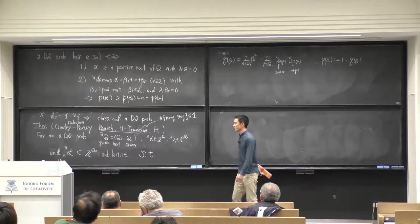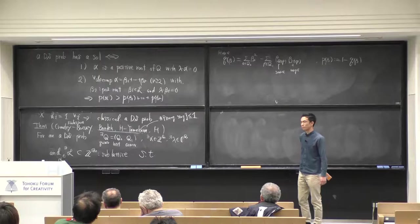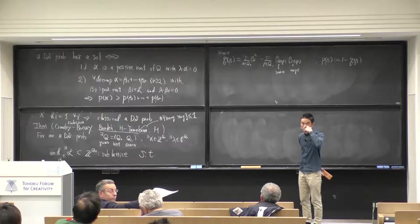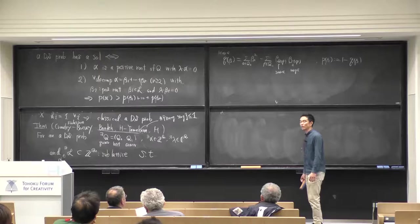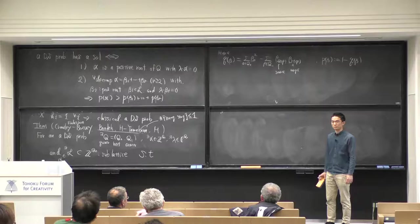I think it is still open even in the Fuchsian case. For the original de Rham-Simpson problem there are still many things to do. The existence condition for a solution is also open, I think. Already Crawley-Boevey has an announcement about solvability of the original de Rham-Simpson problem, maybe ten years ago, but there is still no formal paper.